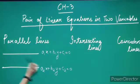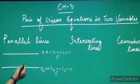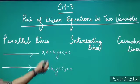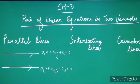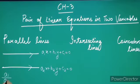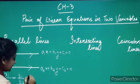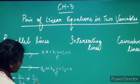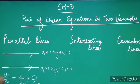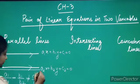We have the variables x and y. By observation of these equations, how can we decide whether the lines are parallel or not? The condition for parallel lines is: a1/a2 must be equal to b1/b2, and this must not be equal to c1/c2.